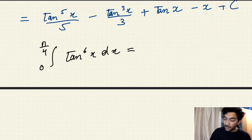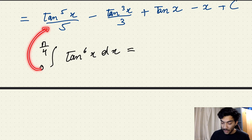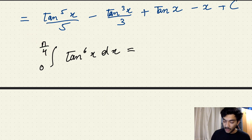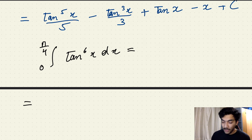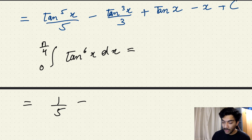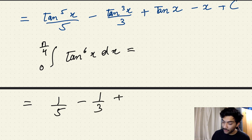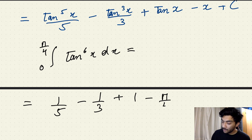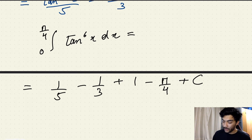If we substitute x equals pi by 4, we know that tan of pi by 4 is 1 and tan of 0 is 0. Substituting the upper endpoint gives tan to the power 5 of pi by 4, which is 1 to the power 5, so 1 over 5, minus tan cubed of pi by 4, which is also 1, giving 1 over 3, then minus 1, minus pi by 4, plus the constant of integration.